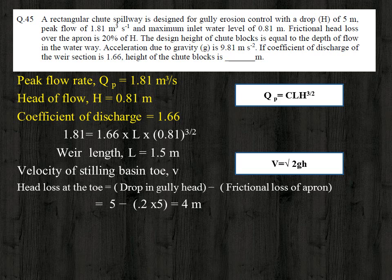The drop in the gully is 5 meter and there is a frictional head loss of 20 percent of h on the apron. So the head loss at the toe = 5 − (0.20 × 5) = 4 meter. Using v = √(2gh) = √(2 × 9.81 × 4), we get the velocity as 8.85 meter per second.